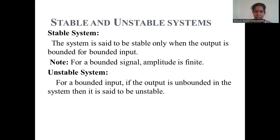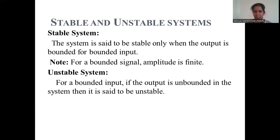A system is said to be stable when the output is bounded for a bounded input. A system is said to be unstable if the output is unbounded for a bounded input. For a stable system, the amplitude of the output is finite, whereas for an unstable system, it is infinite.